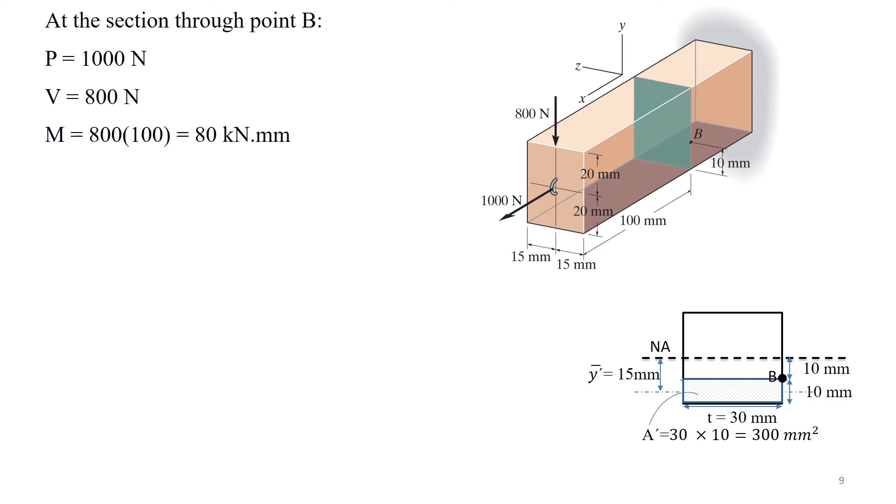From the equilibrium equations, here our normal force P equals 1000 N, V equals 800 N. Our bending moment M is the product of V, which is 800 N, times the vertical distance to point B, which is 100 mm. Therefore, the bending moment at point B is 80 kN·mm.